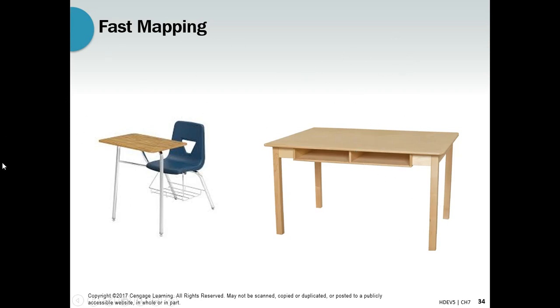He must be talking about this other thing that I don't know what it is. You might be thinking, wait, a table can be a desk, right? That's true, but that's your adult way of thinking. The child is using this more simplistic way of thinking where they go, if the one thing is a table, then it can't also be a desk. Therefore, this other thing must be a desk.